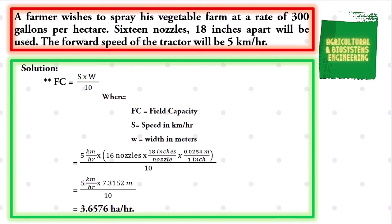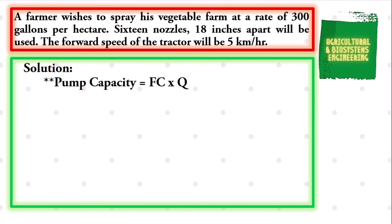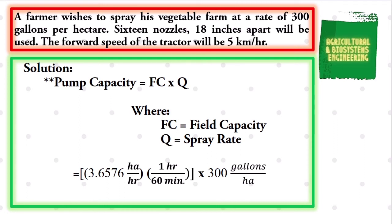The next value we are going to solve is the pump capacity. It can be solved by multiplying FC to Q, where FC is the field capacity and Q is the spray rate. We simply substitute the values in the equation because we already identify them. We have field capacity of 3.6576 hectare per hour. We need to convert hour to minutes using the conversion factor 1 hour equals 60 minutes, multiplied to the spray rate of 300 gallons per hectare. We simply solve and we have a final value for our pump capacity to be 18.288 gallons per minute.